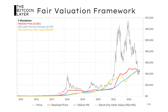Let's take a look at all three components of our fair valuation framework relative to Bitcoin's price over the last several years. The blue line is the 200-week moving average, the red line is the realized price of Bitcoin, and the orange line is our electricity hash value. Look at what has happened to these three valuation metrics over time: there's a steady increase in each of them, huge divergences between price and these metrics, and then price comes back down toward these valuation metrics every few years, clearly showing that Bitcoin's price responds to them.